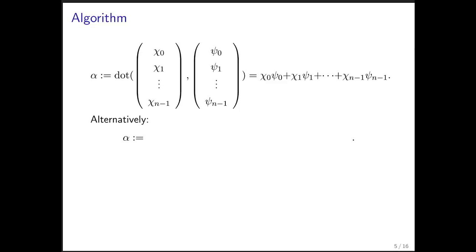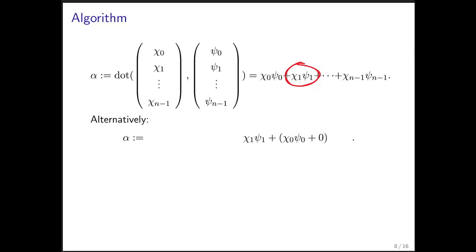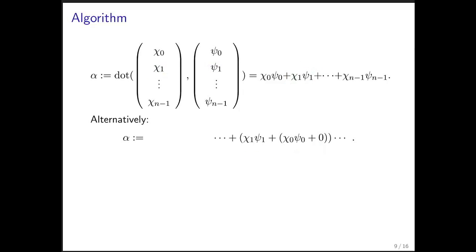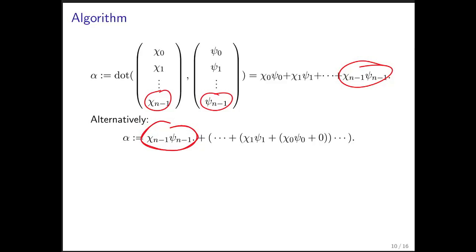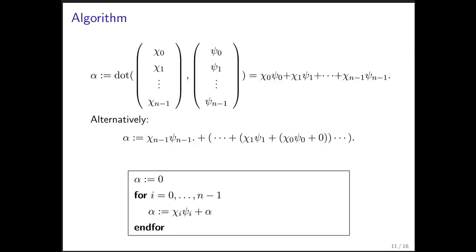To motivate an algorithm, let's look at this slightly differently. Think of this as taking alpha and first assigning 0 to it. After that, we multiply the first two components together, then the next two components together and add that to what's already in alpha, and so forth — eventually multiplying the last two components together and adding that to what you're accumulating in alpha. This motivates the algorithm: you start by setting alpha equal to 0, and then for i equals 0 to n minus 1, you take what is already accumulated in alpha and add to it the product of the components χᵢ and ψᵢ.